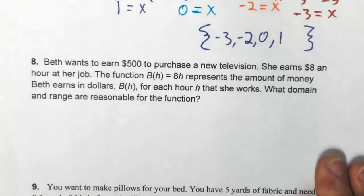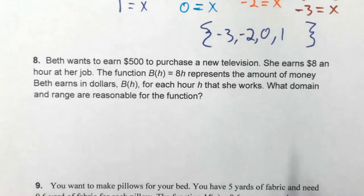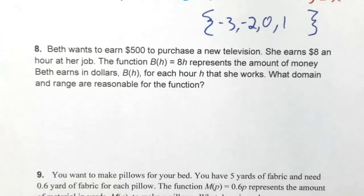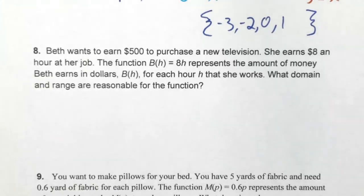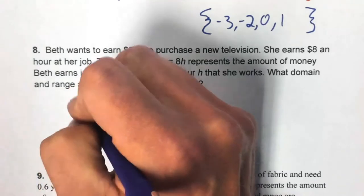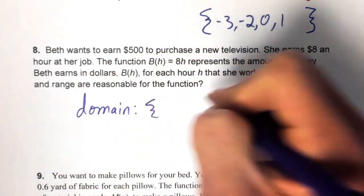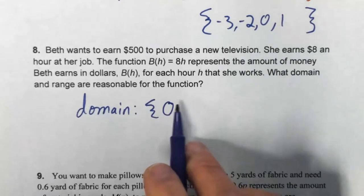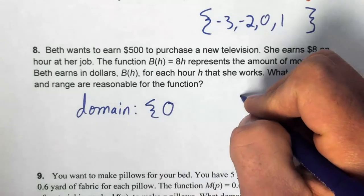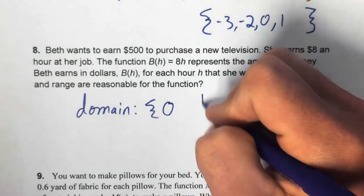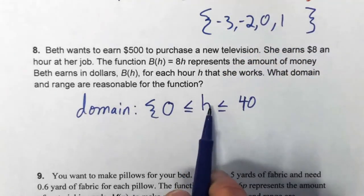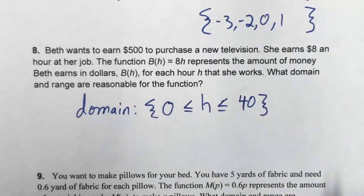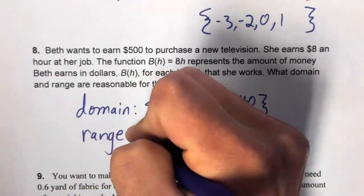Number eight: Beth wants to earn $500 for a new TV. She earns $8/hour. The function b(h) = 8h represents earnings for h hours worked. For the domain, the minimum hours would be 0 and a reasonable maximum is a 40-hour work week, so: 0 ≤ h ≤ 40.